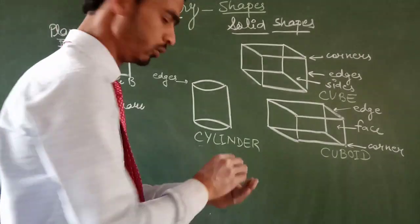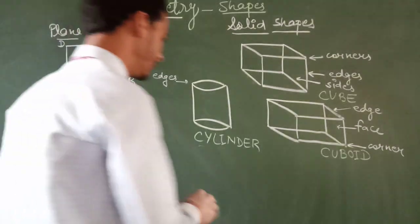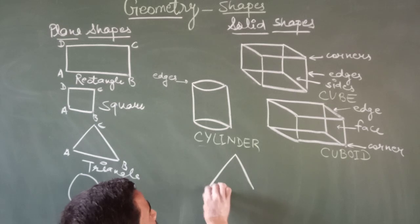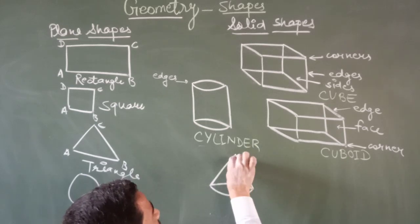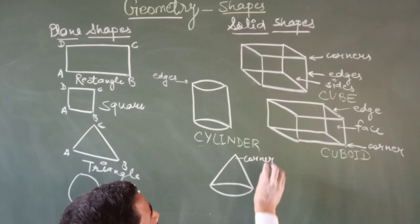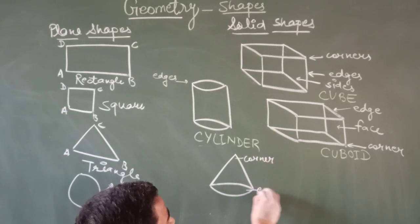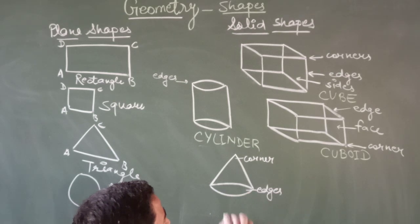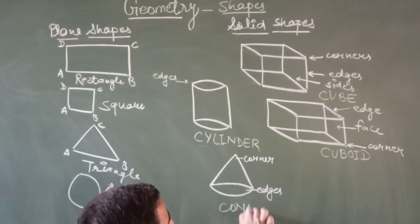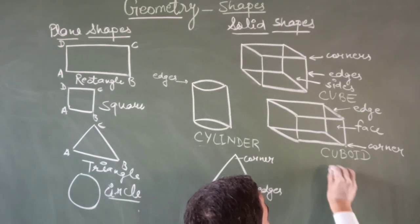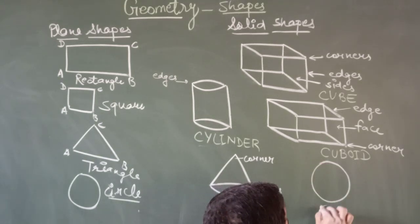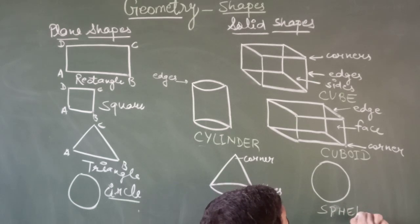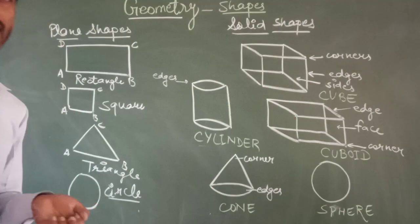There are two more shapes. The next shape is a cone — it has corners, edges, and faces. And the last shape is a sphere. A sphere has no corners, no edges, and no faces.